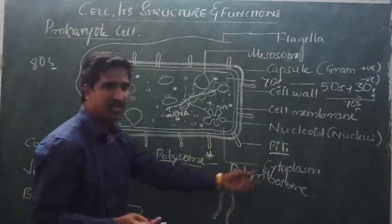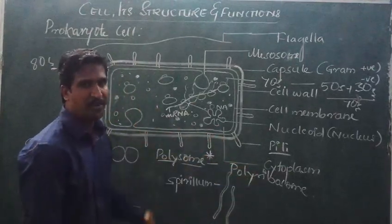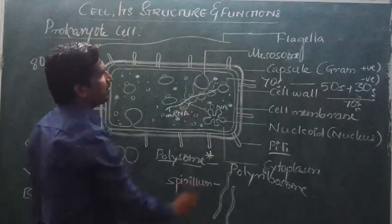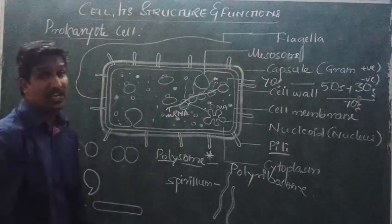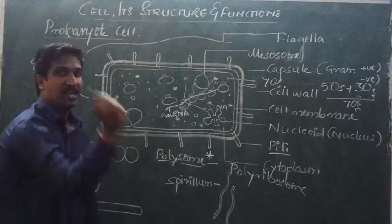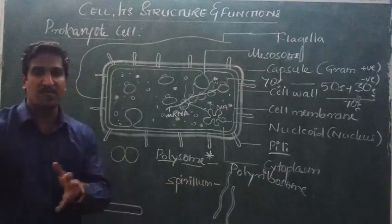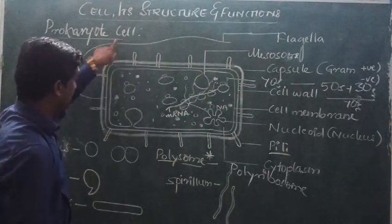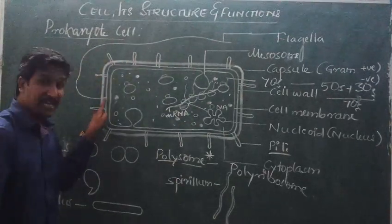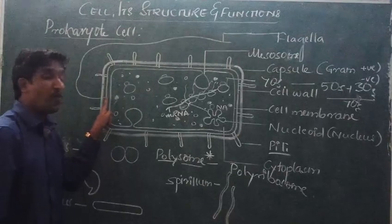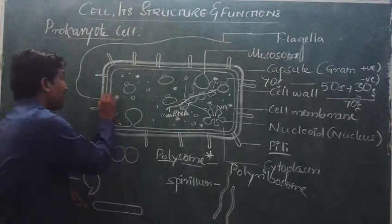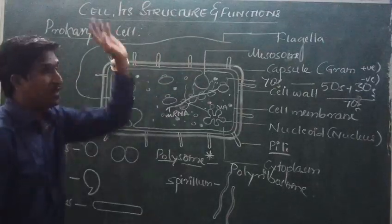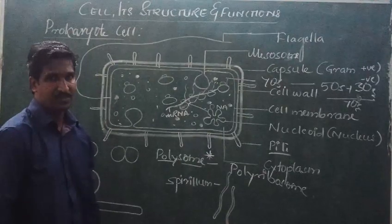Then comes the flagella. A single flagellum will be there, and this flagellum is helpful for flapping. By flapping, the bacteria moves from one place to another. A single flagellum, a hair-like structure, has a base and knob present arising from the plasma membrane itself. Flagella will be helpful for its movement.